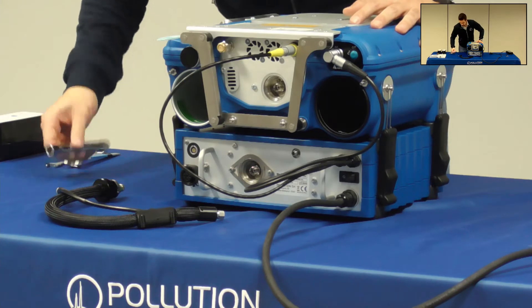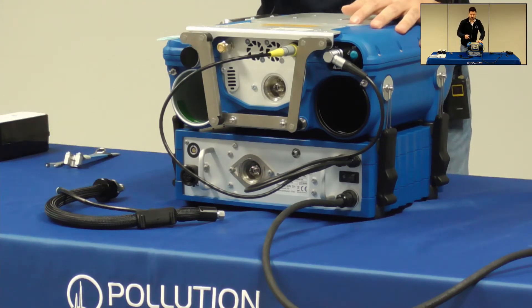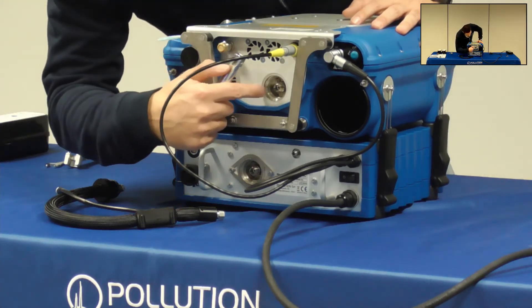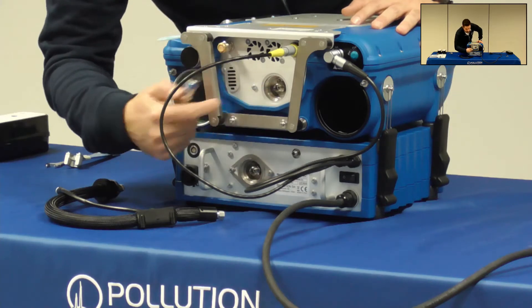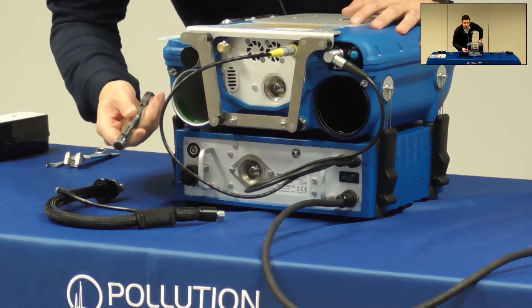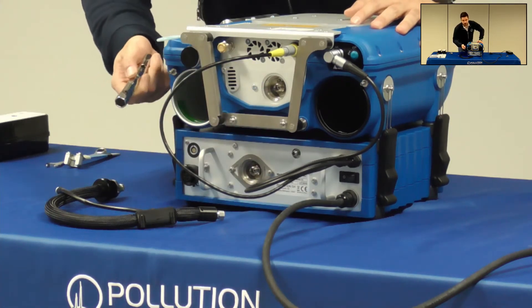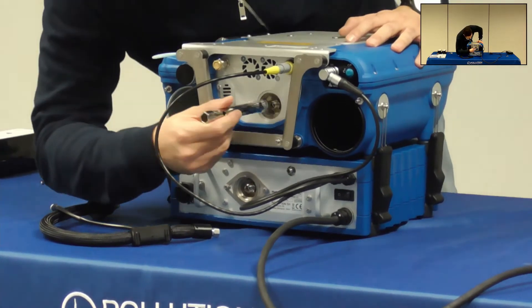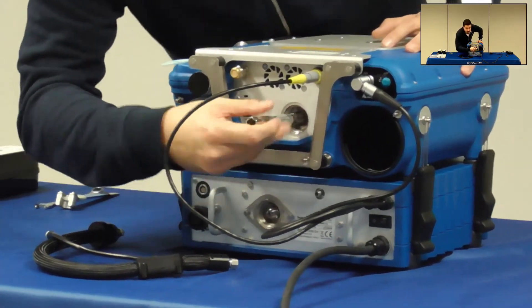In order to connect the transfer line you need to remove the inlet filter on the back of the FID by using this key that is supplied within the first maintenance kit. Be careful that the filter will be hot if the instrument is already switched on.